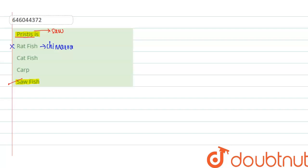Catfishes are represented by the presence of barbels — for example, it includes Clarias etc. — so this cannot be the answer either. The third option is carp; carps are the most famous edible fishes, so even this is not the answer.